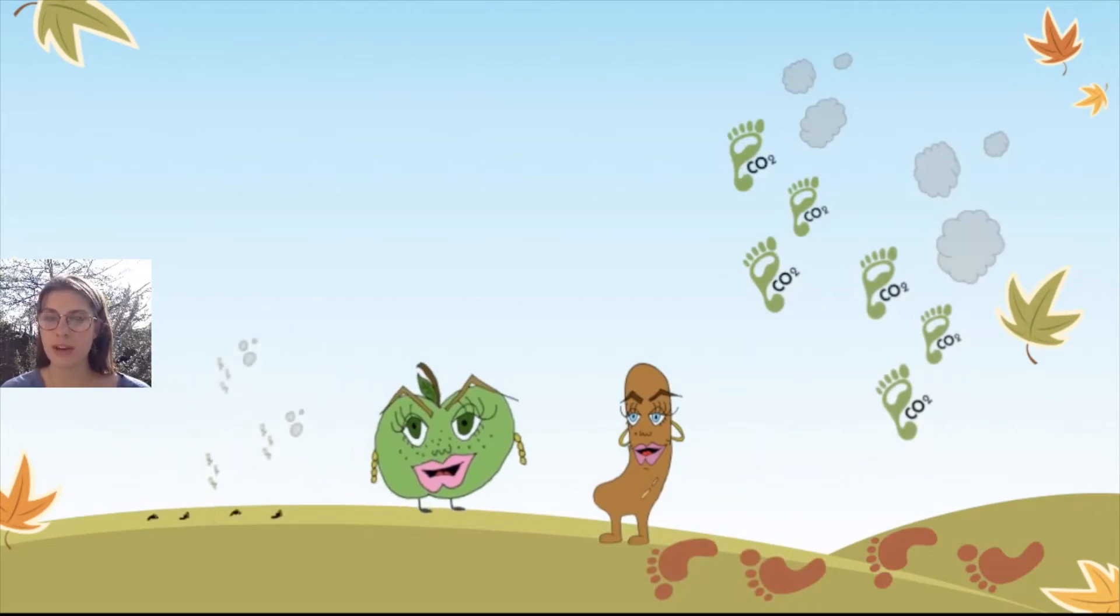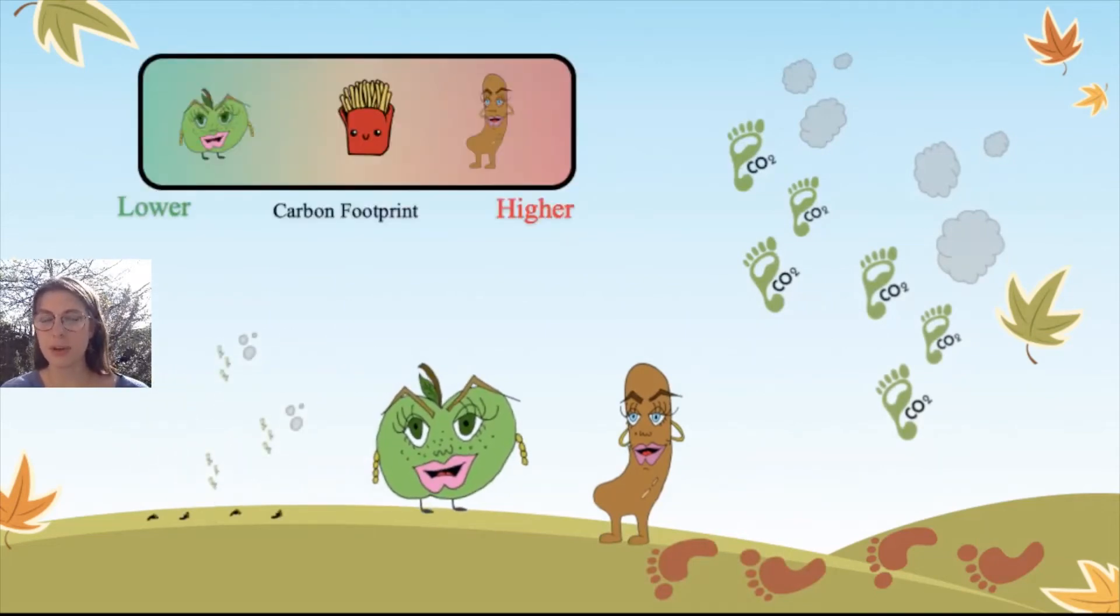Most fruits and veg have a lower carbon footprint. Processed foods like crisps and chips are a little bit bigger from the steps of slicing, processing and packaging the potatoes. Any animal products like cheese, milk and sausages have a much higher carbon footprint.